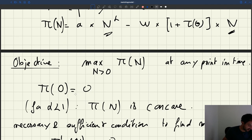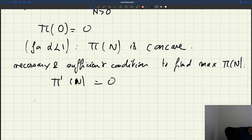So let's try to figure out at what level of employment the derivative gets to zero. So we are solving pi prime of n is equal to zero. So using the expression for pi that I just showed you, we get that a times alpha times n to the alpha minus 1 minus w times 1 plus tau of theta has to be equal to zero.